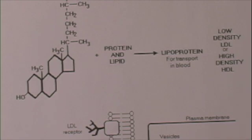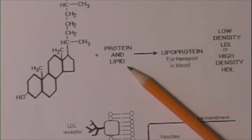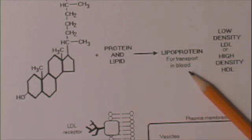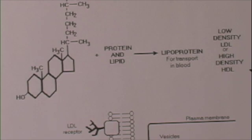Cholesterol, like many other things, is transported in the blood. It combines with protein and other lipids and becomes a lipoprotein. There are two major types of these lipoproteins: low-density, or LDL, and high-density, or HDL.